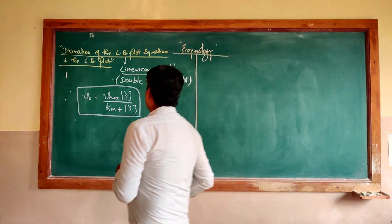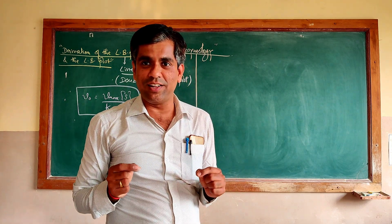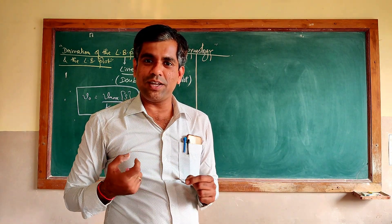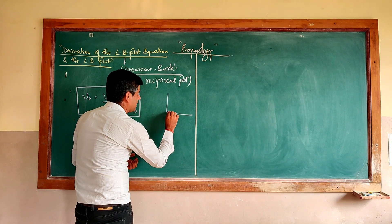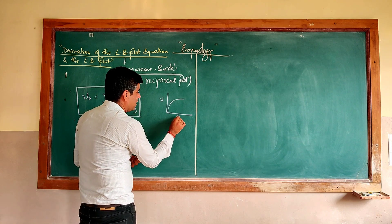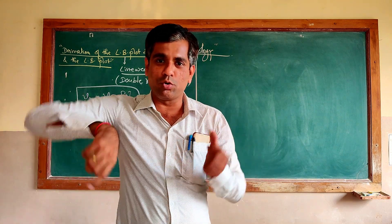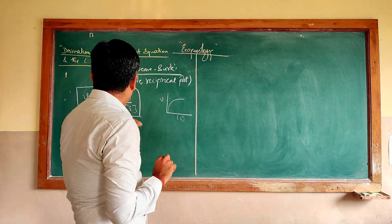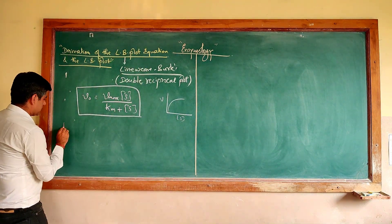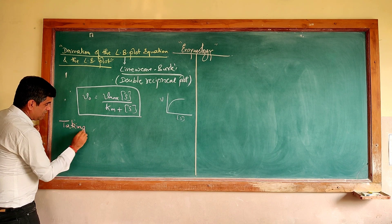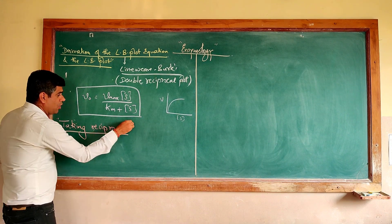So if you remember the Michaelis-Menten equation — also called the MM equation — V₀ = Vmax × S / (Km + S). The MM plot gives a hyperbolic curve when you plot V versus S. To straighten it out, what Lineweaver and Burk did was very simple: they took the reciprocal on both sides of the equation.